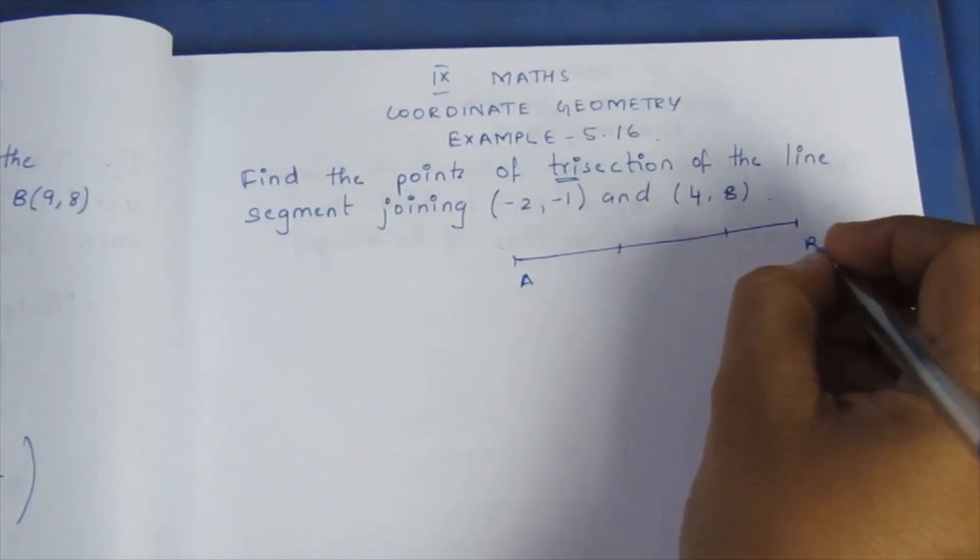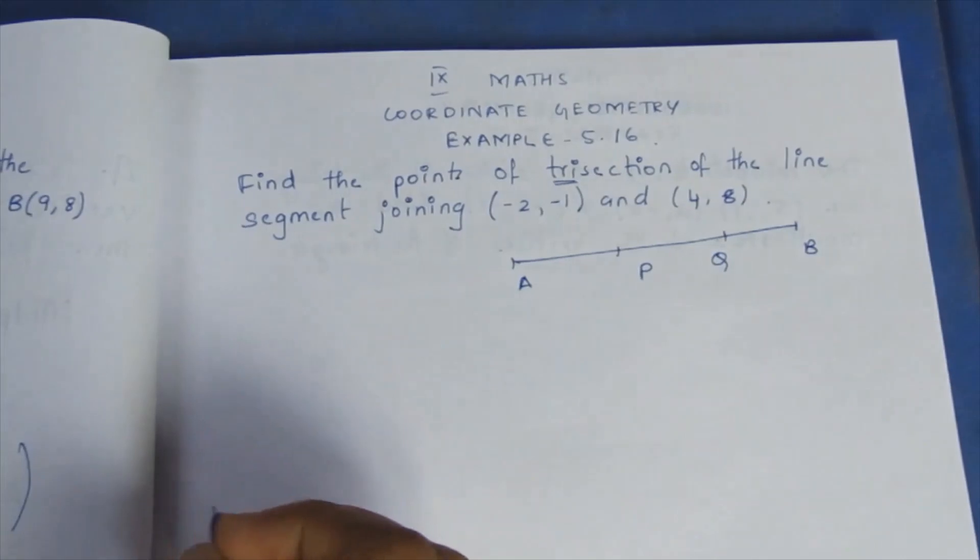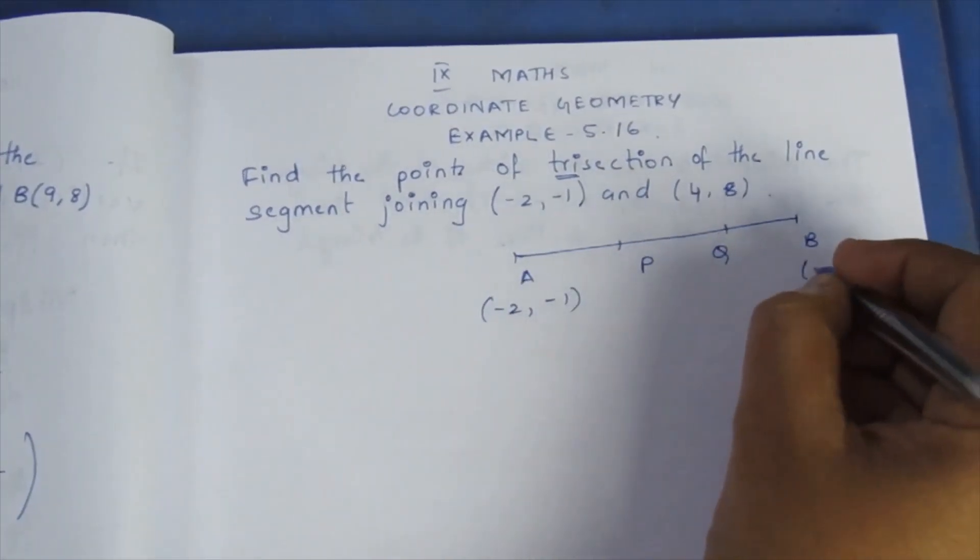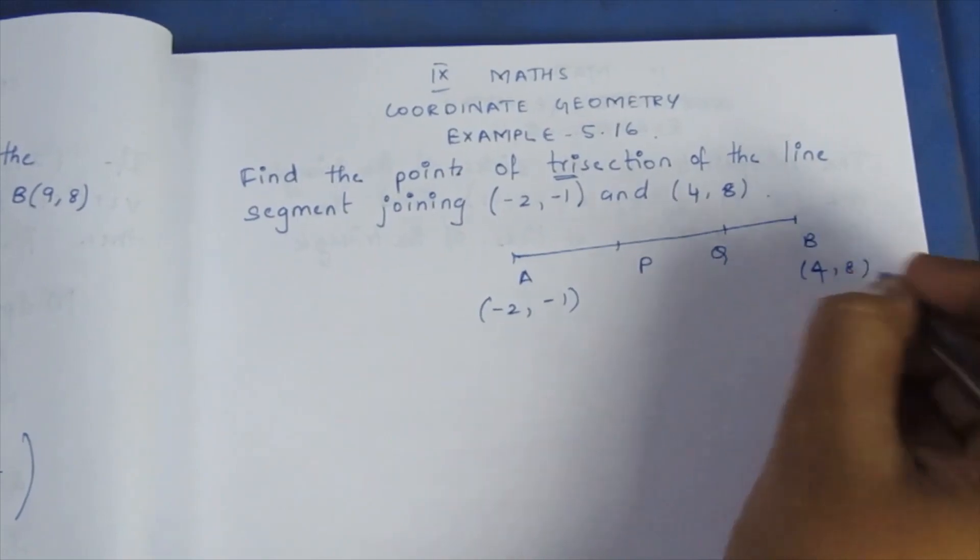This is A and B. P and Q are the points. If we choose the line, the line is divided with two points.